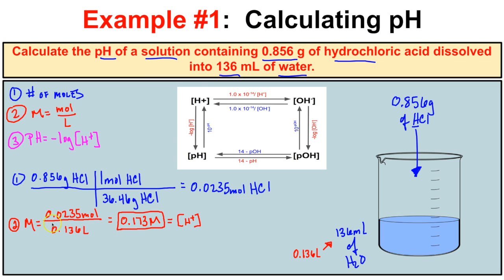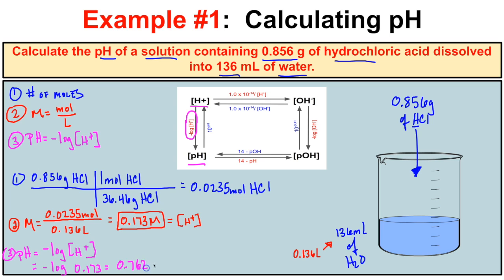In step three we calculate our pH. We know the hydrogen ion concentration, so we take the negative log of our H+ concentration: the negative log of 0.173. Putting this in our calculator gives us a pH of 0.762. So the pH of this solution made by dissolving 0.856 grams of HCl in 136 milliliters of water is 0.762.